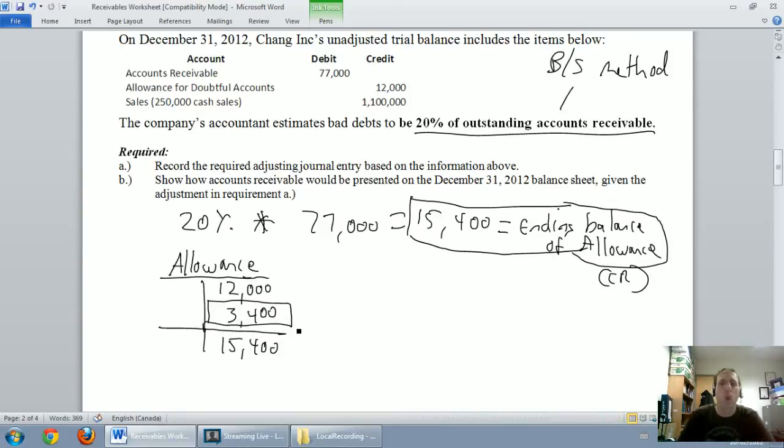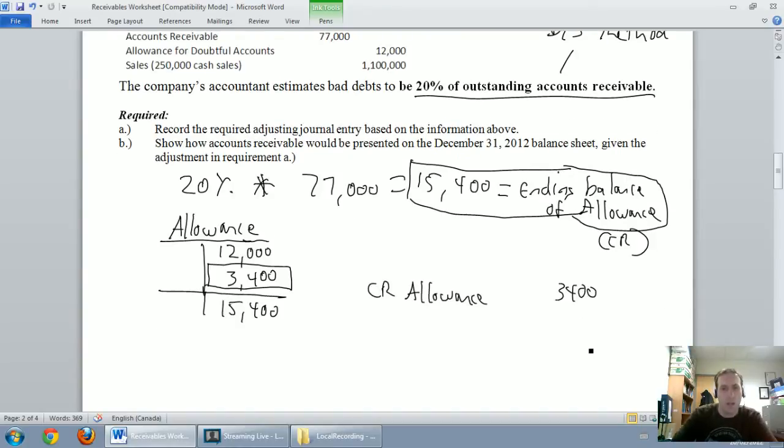Okay. So I know I need to credit my allowance for $3,400. Again, if it's missing in a T account, the way to remedy that is to do a journal entry. So on December 31st, I'm going to credit my allowance for $3,400.